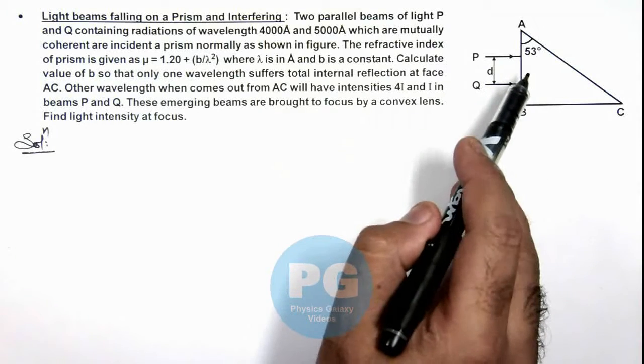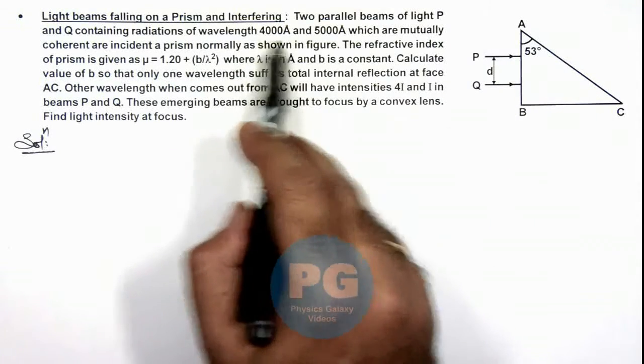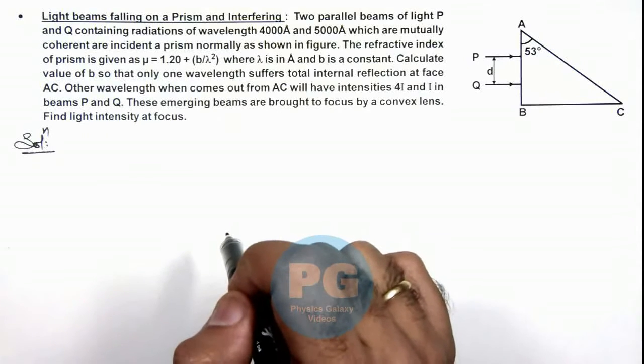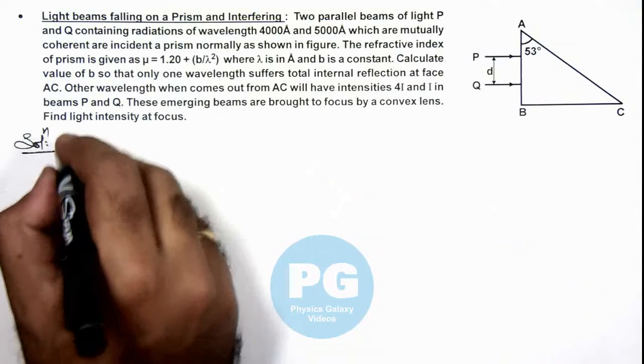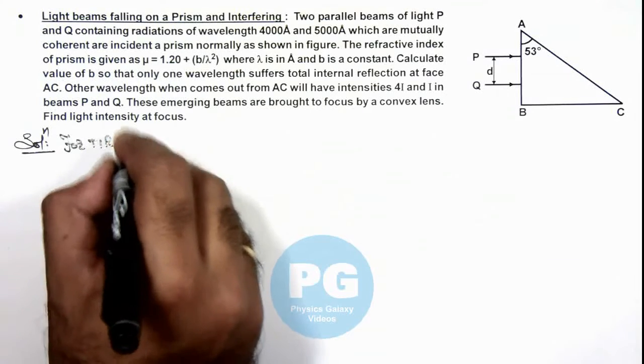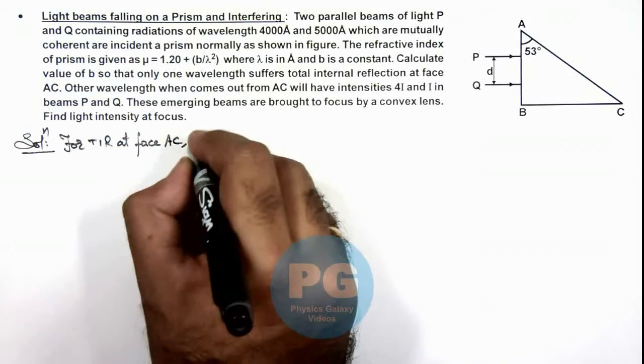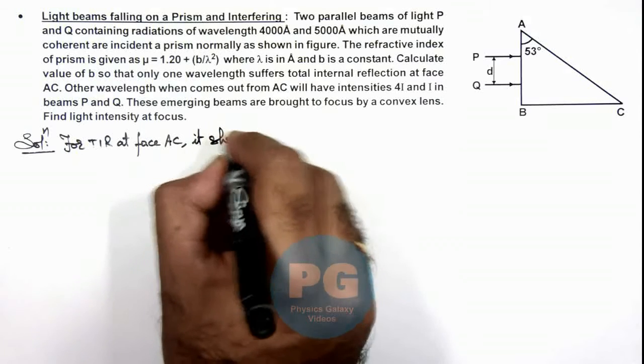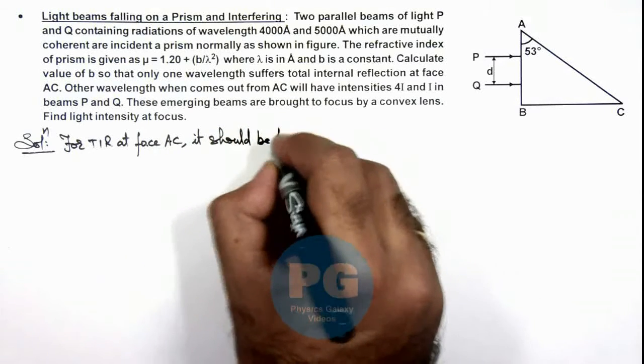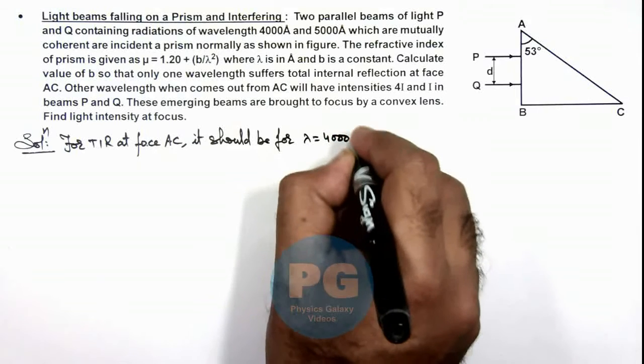So if TIR should take place only for one wavelength it should be for 4000 angstrom. So here we can write, for total internal reflection at face AC, it should be for λ equals 4000 angstrom.